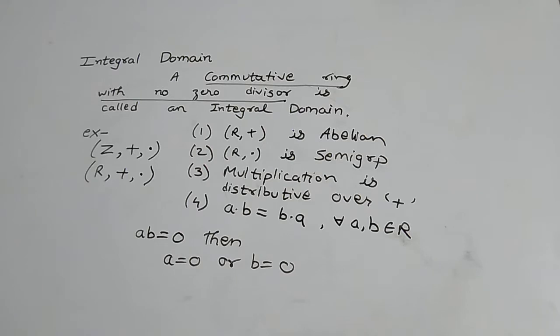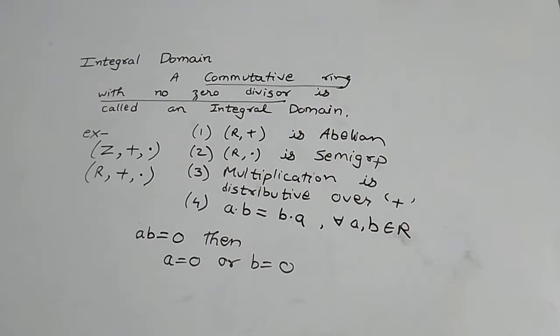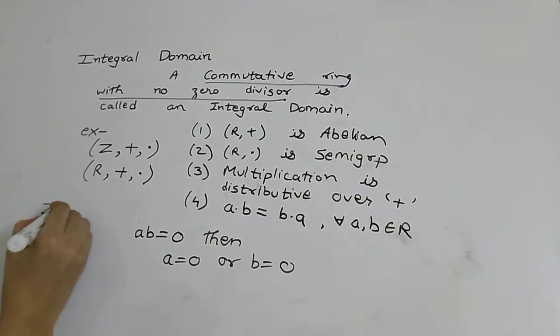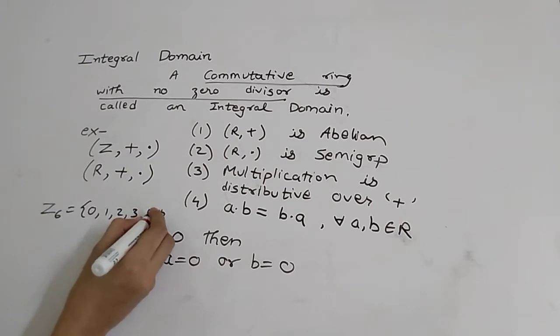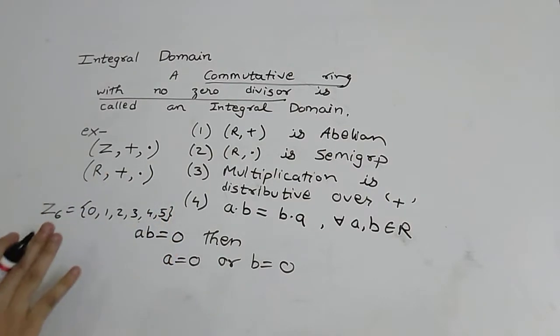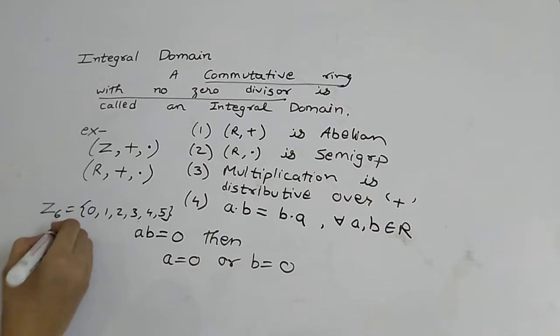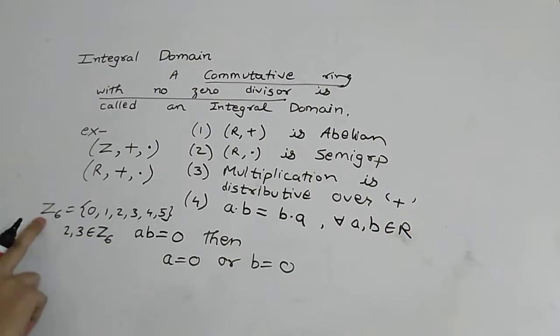So we all know Z6 is a ring which consists of 0, 1, 2, 3, 4 and 5. So now we have 2, 3 elements belonging to Z6. Now Z6 is a ring under addition modulo 6 and multiplication modulo 6. So now multiplication modulo 6 applied over 2 and 3 elements.